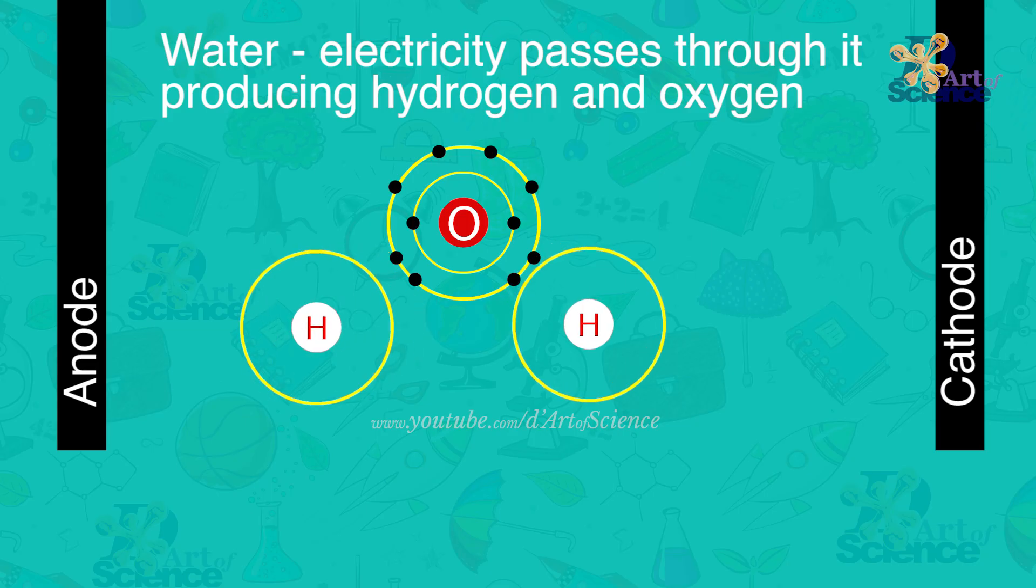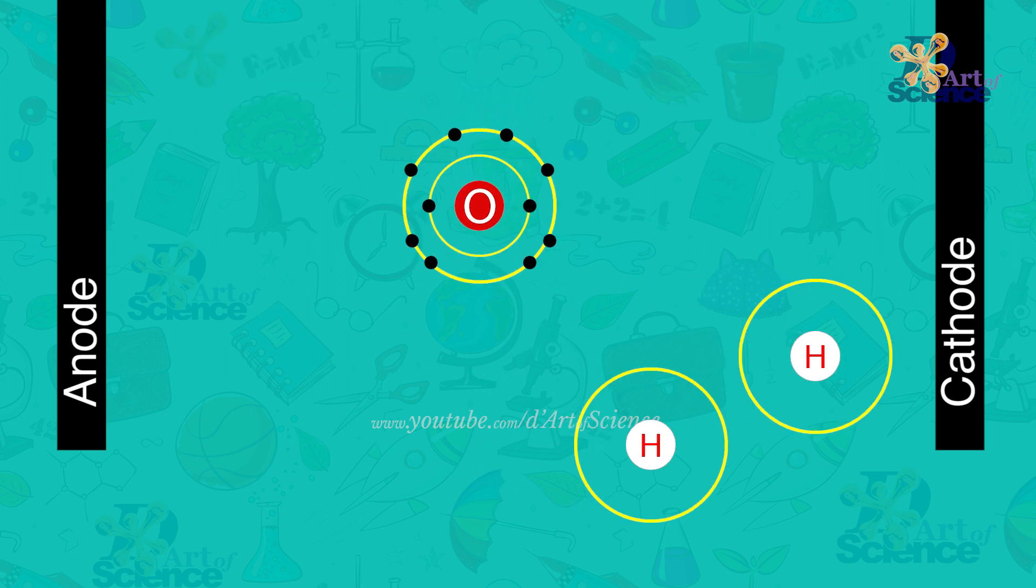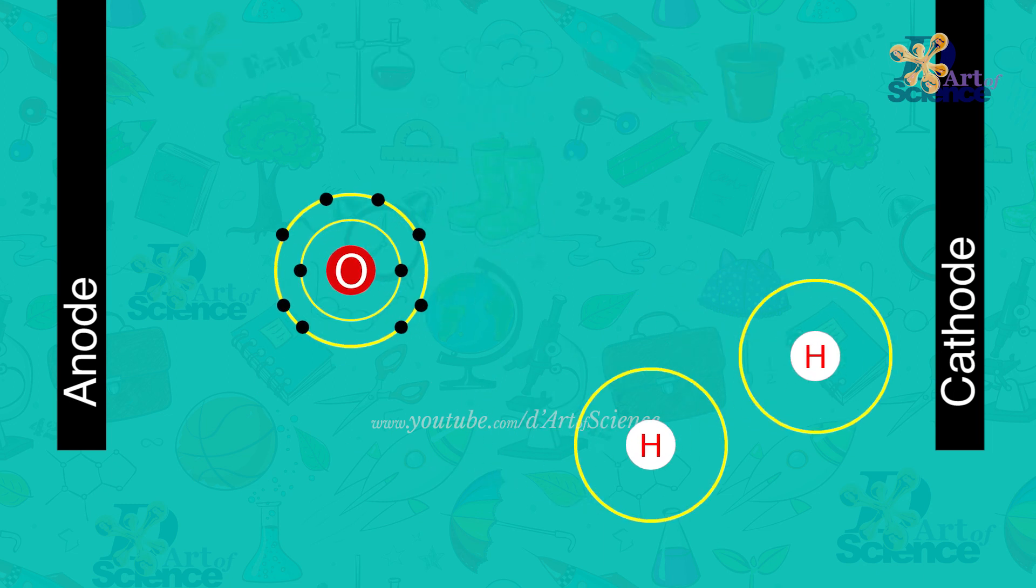Water, electricity passes through it, producing hydrogen and oxygen. The chemical decomposition of acidified water into hydrogen and oxygen caused by an electric current passing through it is called electrolysis.